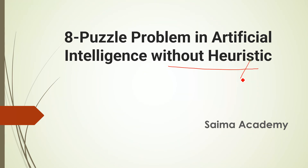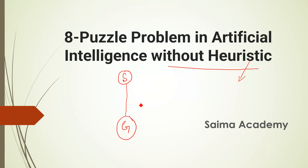Here I will quickly explain what heuristic means. Heuristic means estimation — suppose this is our starting point and this is our goal state. We already have some idea, or in advance we know what the cost is to reach the goal state. That is called the heuristic. But this is not our topic; our topic is without heuristic.